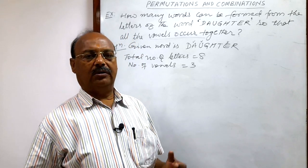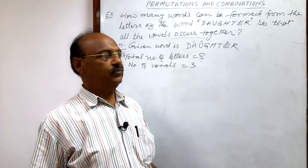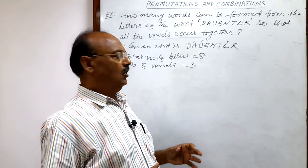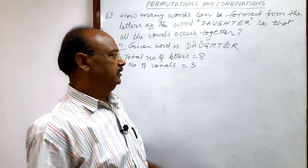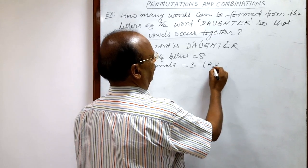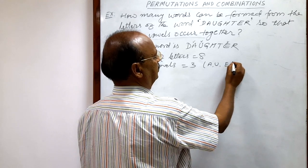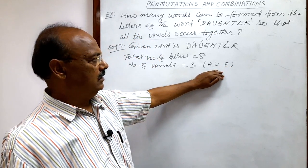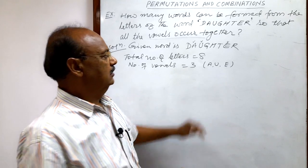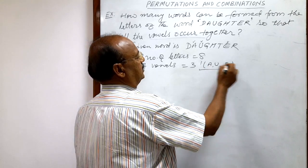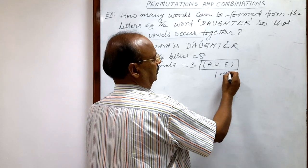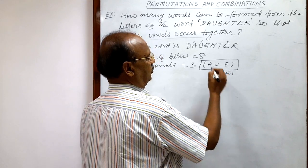So we have to form all the possible words with the help of these 8 letters, such that all the 3 vowels come together. The 3 vowels are A, U and E. So when 3 vowels are kept together, then this is treated as 1 unit. This is treated as 1 unit.